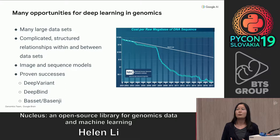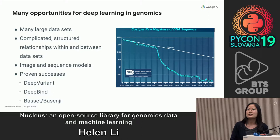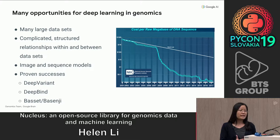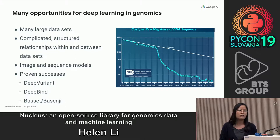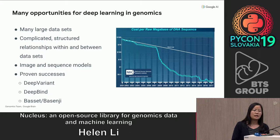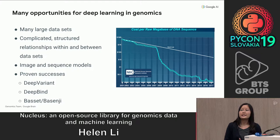One thing that is really exciting for us is that there are many opportunities for deep learning in genomics. To formulate a deep learning problem, you need a lot of data. And genomics is perfect for this, because as shown in this plot, the cost for sequencing a genome reduced drastically over the past decade. So now we have a lot of these large and very complicated datasets. They may display convolutional structures, so we can use techniques from computer vision and natural language processing. There have been a number of proven successes of applying deep learning in genomics.